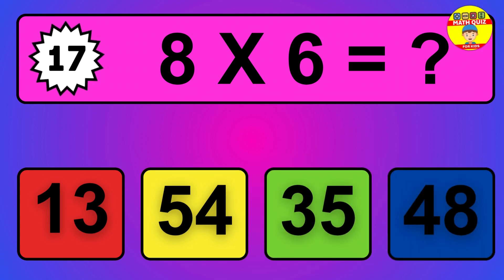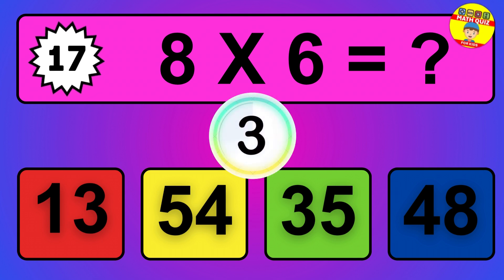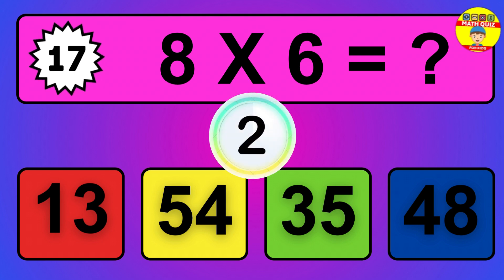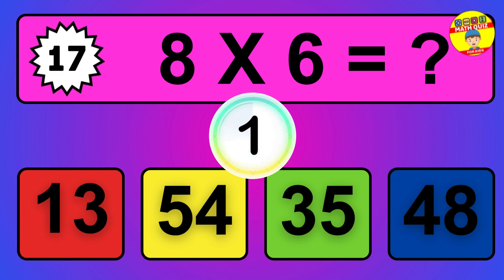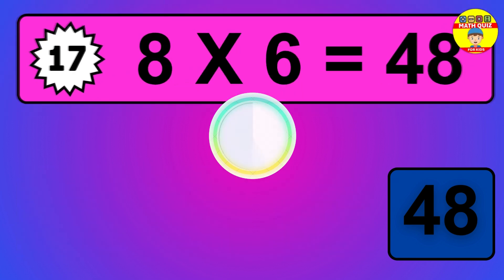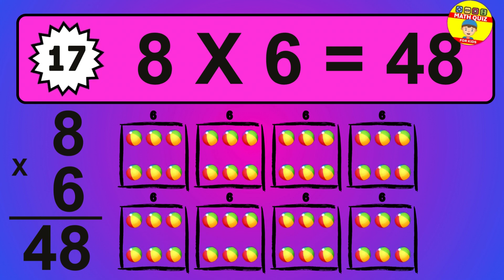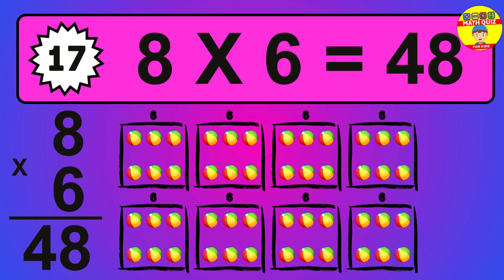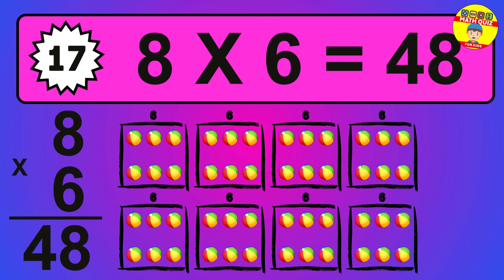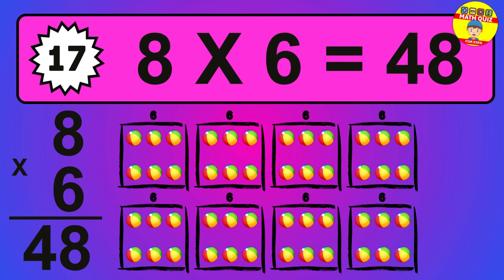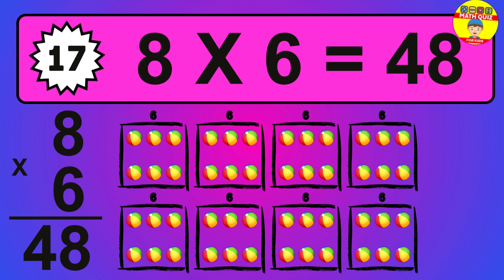Question 17. 8 times 6 equals what? So the answer is 8 times 6 is 48. To calculate, we have 8 groups with 6 balls each one. So how many balls do we have? 48 balls.